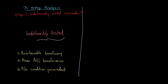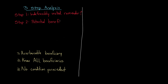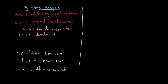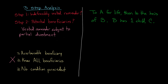Step two is when you ask yourself: is there the uncertain potential for more beneficiaries? If so, you have a vested remainder subject to partial divestment. This applies when the second requirement for indefeasibly vested remainders isn't met — that we know all the beneficiaries. For example: to A for life, then to the heirs of B; B has one child, C. There's at least one ascertainable beneficiary, C, but we don't know who all beneficiaries are because B can always have more children. So C has a vested remainder subject to partial divestment.